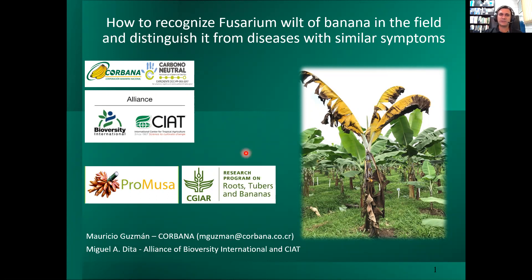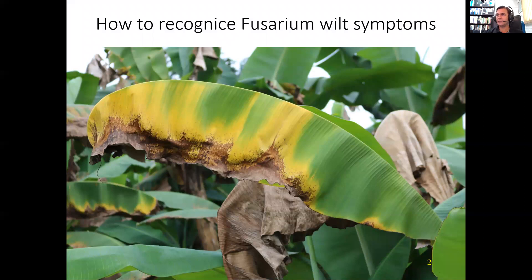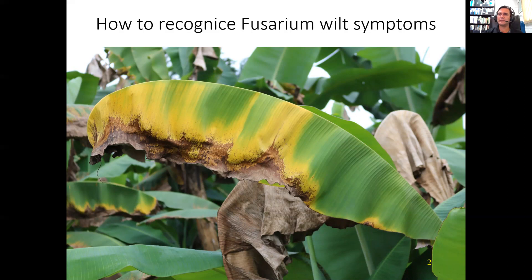The title of my presentation is 'How to Recognize Fusarium Wilt of Banana in the Field and Distinguish it from Diseases with Similar Symptoms.' Fusarium Wilt of Bananas is a typical vascular disease, and the symptoms, internal and external, are closely related to the process of infection by the pathogen within the plant. In this talk, we intend to review a group of symptoms, both external and internal, that may help us to recognize the disease in the field. We will also quickly review some biotic and abiotic factors that may generate some confusion in the field and how to discriminate them from Fusarium Wilt of Bananas.